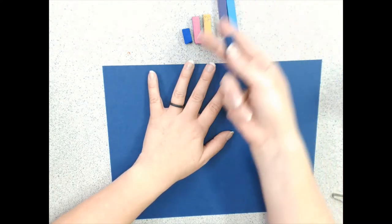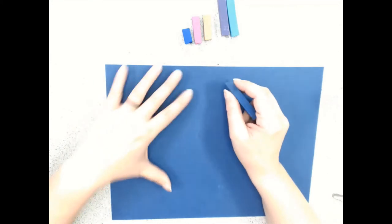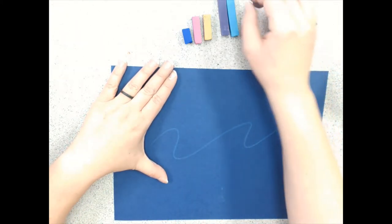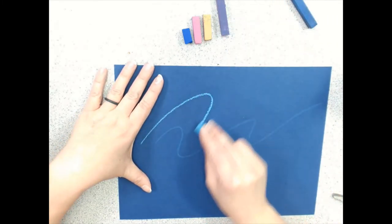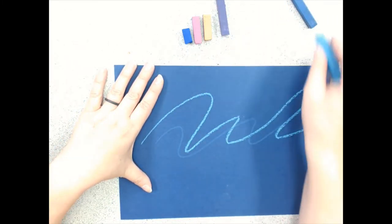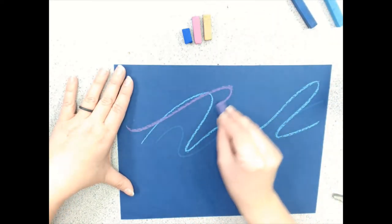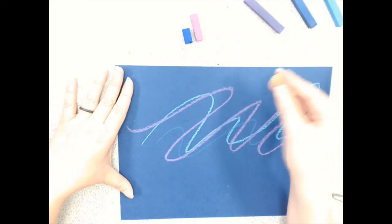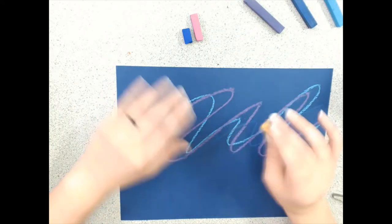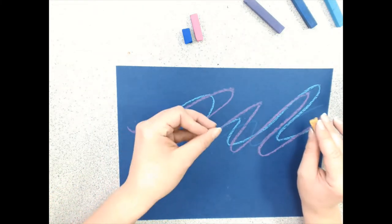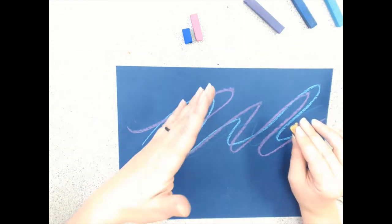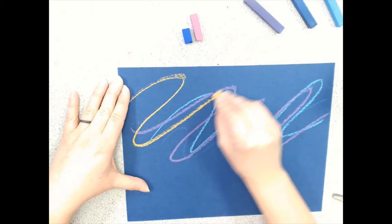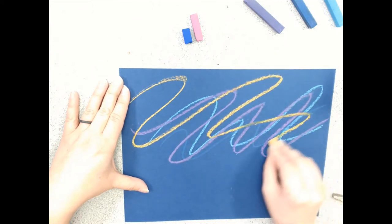So what you're going to do is you're going to take your chalk pastel or your sidewalk chalk and you're going to just create some squiggly lines on your paper. It doesn't matter where they go or what they look like. The only important thing that you do is that you don't blow on your paper. You know how when you are drawing on the sidewalk and you color, color, color, and you see all that extra chalk on the sidewalk? So you blow it all away. You do not want to do that here. We are going to be using that to create the effect of the aurora borealis.